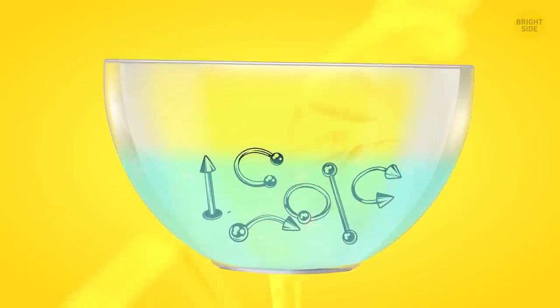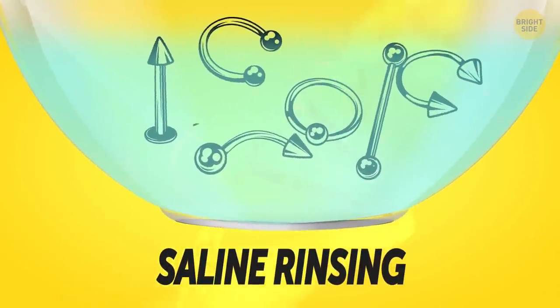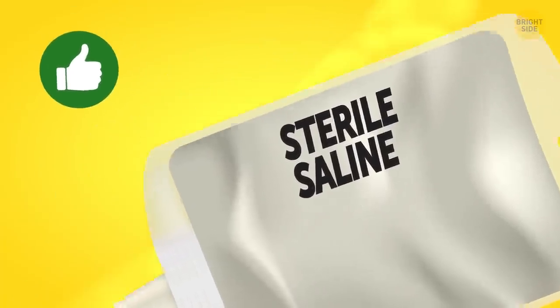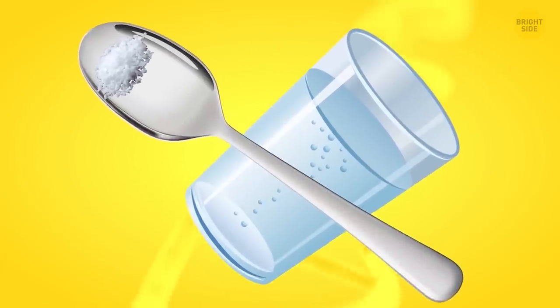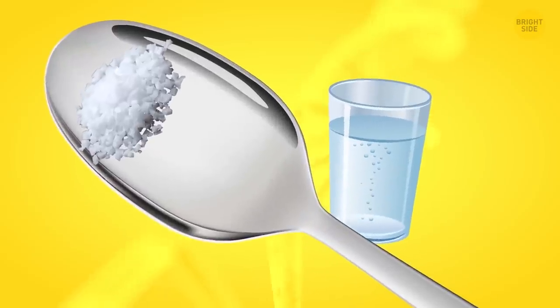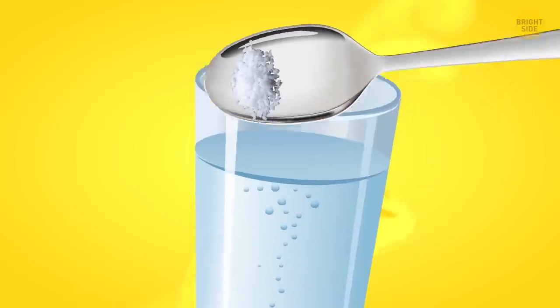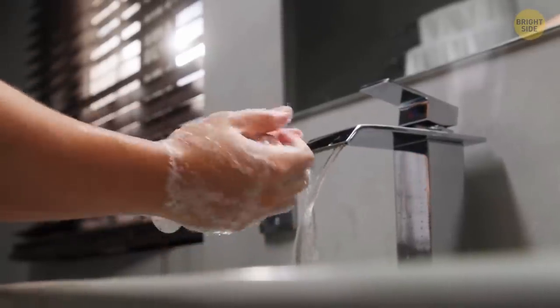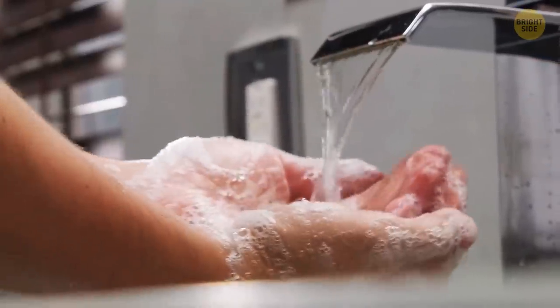For most accessories though, saline rinsing will be enough. It's best to buy a package of sterile saline, and if it's unavailable, go for a saltwater solution. Take a quarter teaspoon of iodine-free sea salt and dissolve it in a cup of warm distilled water. Wash your hands not to infect your pierced area. Remember the dirty fingernails?